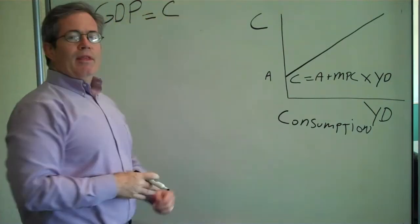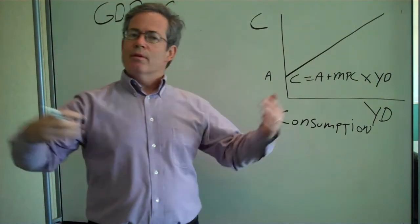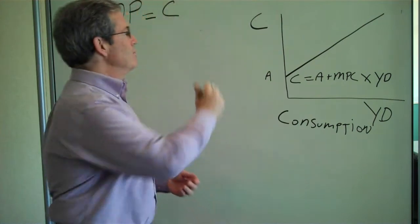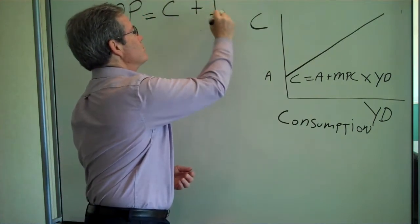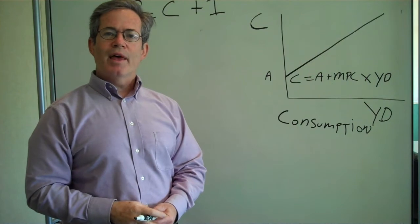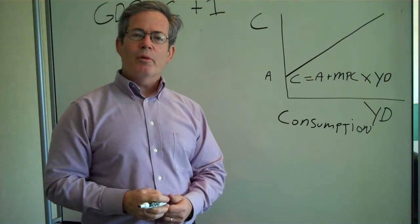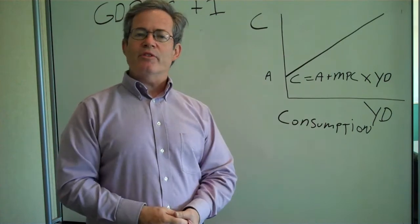So GDP then, according to our simple model, depends on consumption. Now let's add investment to that. Investment in plant and equipment. Investment in housing. What determines how big investment is?